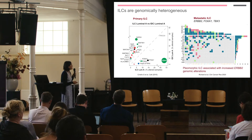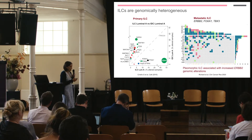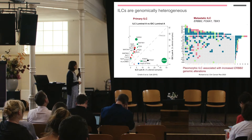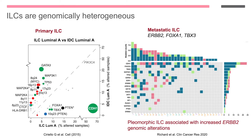We've heard a lot during this meeting about mutations and the mutational repertoire of both primary and metastatic ILC. The mutational repertoire is quite different between primary and metastatic ILC. We see enrichment in mutations such as TBX3, HER2, FOXA1 in metastatic ILC. As Wilbur pointed out, ARID1A as well, and pleomorphic ILCs are particularly associated with an increased incidence of HER2 genomic alterations.